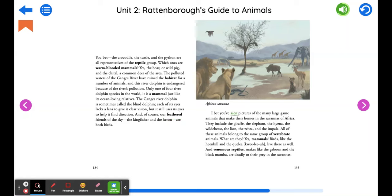I bet you've seen pictures of the many large game animals that make their homes in the savannahs of Africa. They include the giraffe, the elephant, the hyena, the wildebeest, the lion, the zebra, and the impala. All of these animals belong to the same group of vertebrate animals. What are they? Yes, mammals!